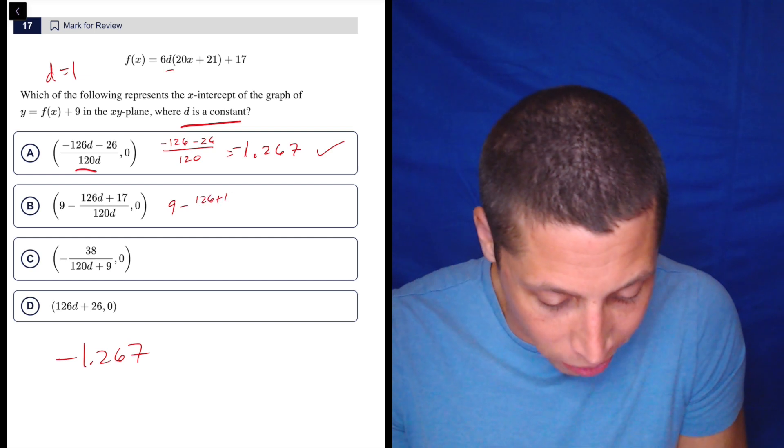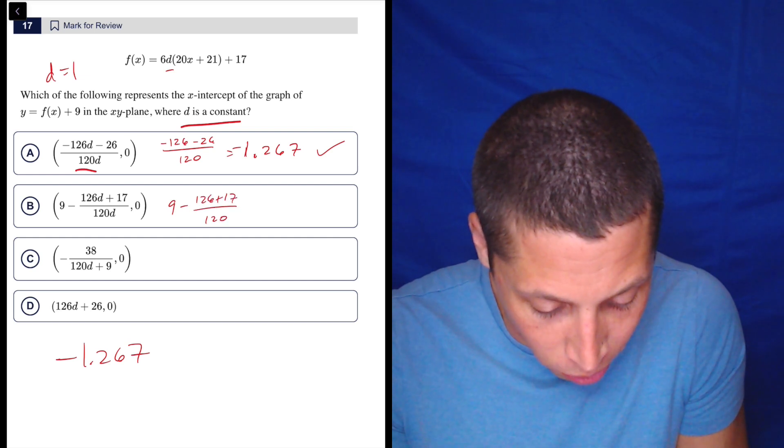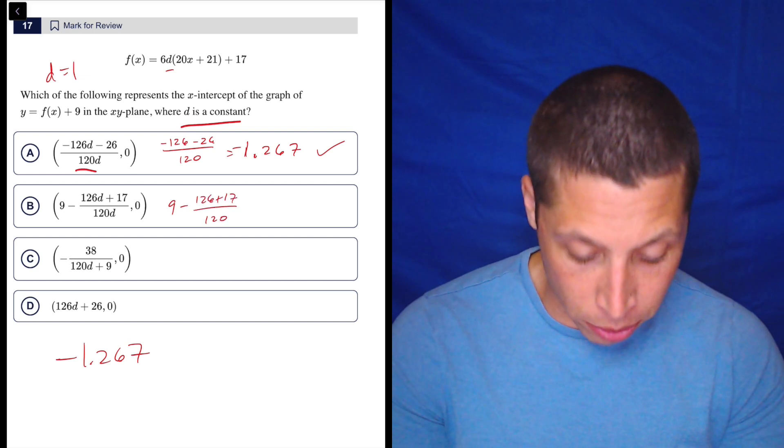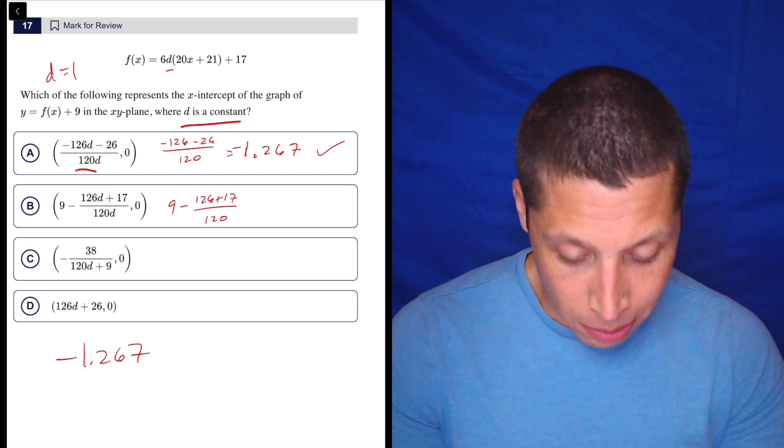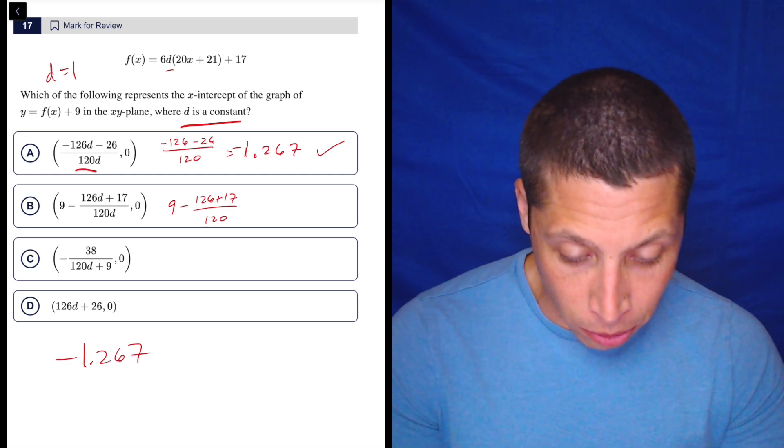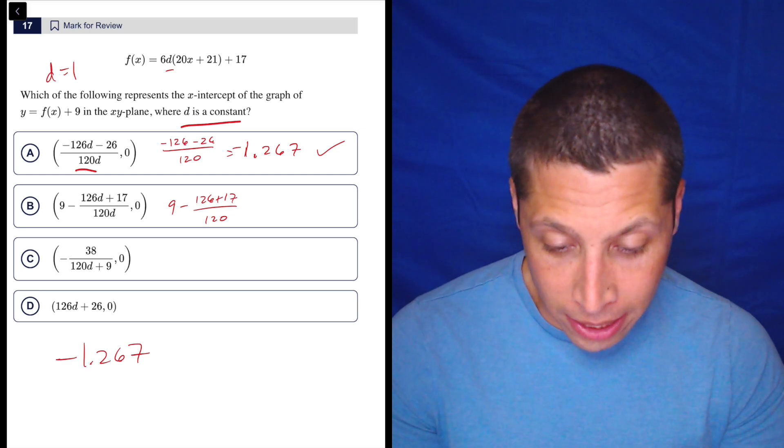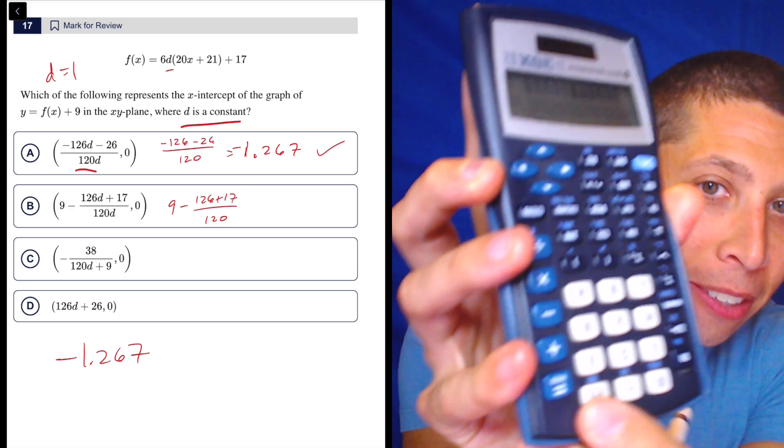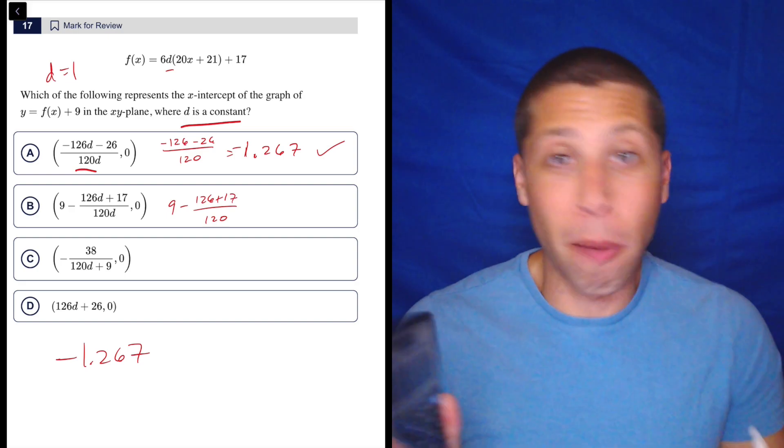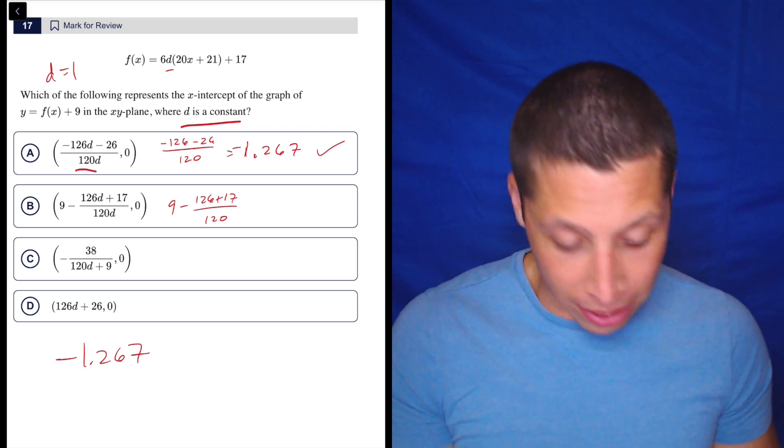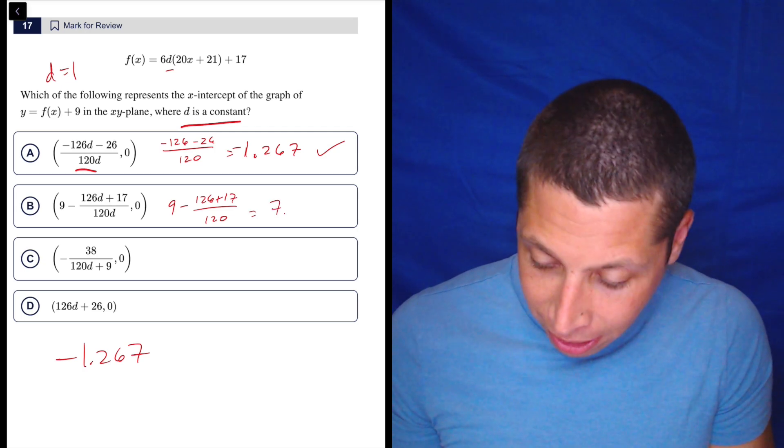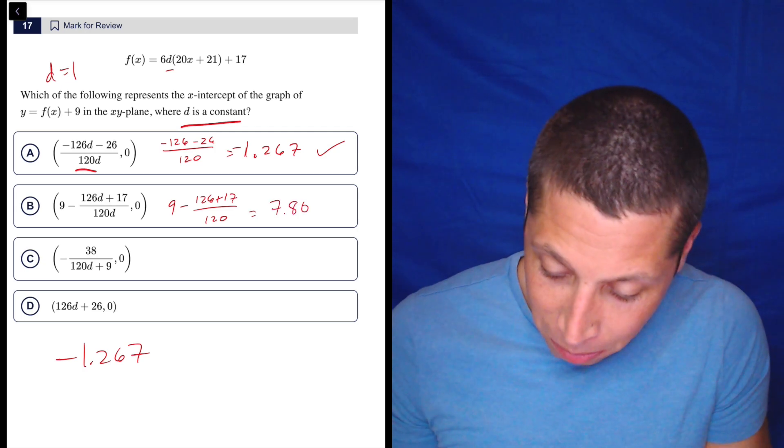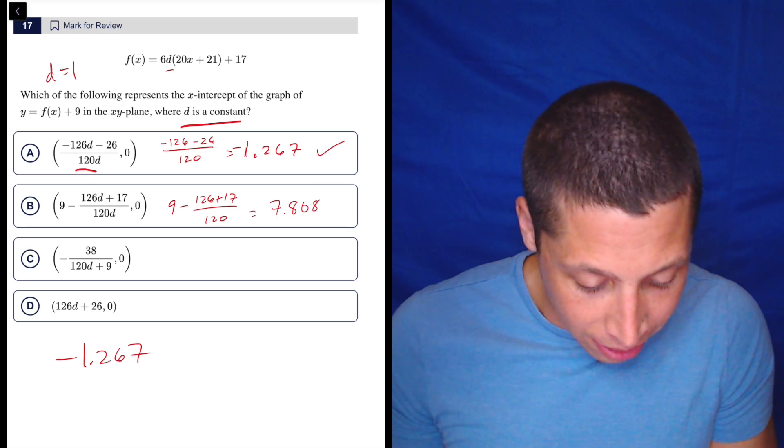So 9 minus 126 plus 17 over 120. So I'm going to do that by doing 126 plus 17 divided by 120, and I'm going to do 9 minus that answer. So you should know where your second answer button is. I got mine right there on my calculator. So that's good for doing things very quickly. This is going to be 7.808.